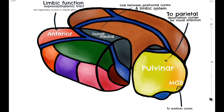Lateral to this, we have the lateral geniculate body, which is part of the visual pathway, acting as a relay between the optic nerve to the occipital lobe. Moving anteriorly from the lateral geniculate body, we have the intralaminar nuclei. This receives input from the brainstem and has various non-specific outputs.